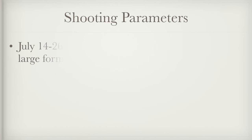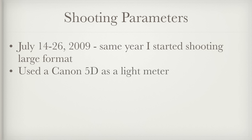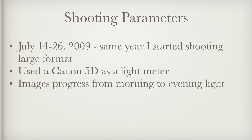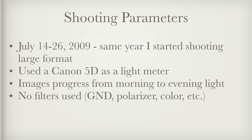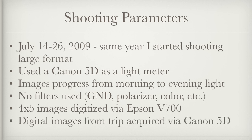Before I show you some examples of Fujifilm Velvia's latitude, I'd like to briefly list the shooting parameters of these images. All of the images were taken during my wife and I's first year wedding anniversary trip to the Wild West. This was the same year in which I began shooting large format. I didn't have a handheld light meter, so I used my original Canon 5D as a light meter to achieve zone 5. The images progressed from morning light to evening light, and I used absolutely no filters. The 4x5 images were digitized using my Epson V700 scanner, and you also get to see the digital versions of the trip for comparison of the dynamic range.